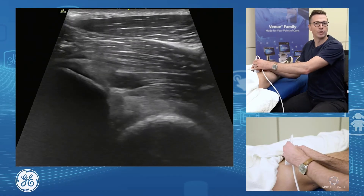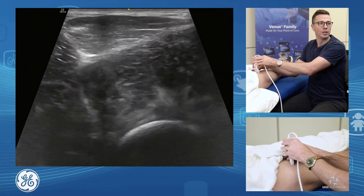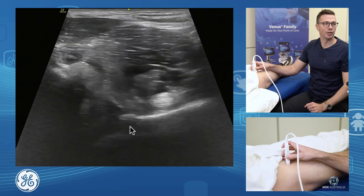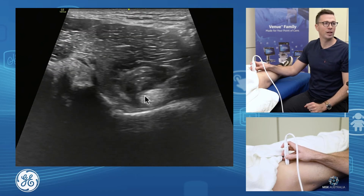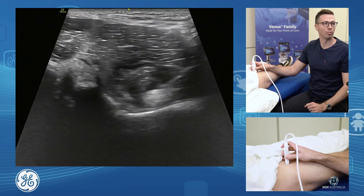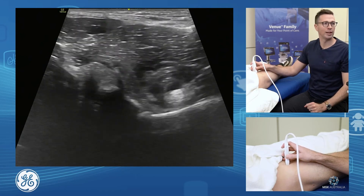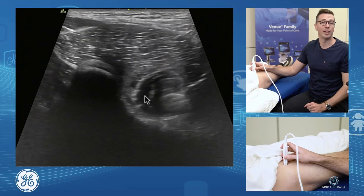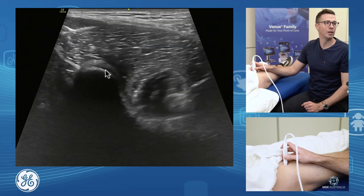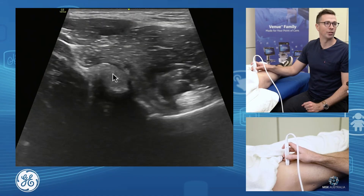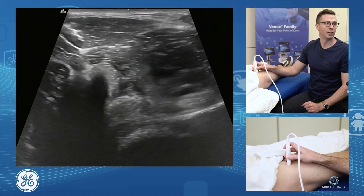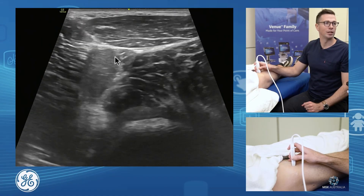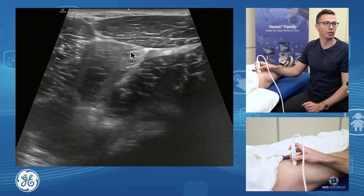The other way of getting to rectus femoris is from the anterior hip joint. We find our iliopsoas and just bring our probe lateral and a little bit superior to identify the anterior inferior iliac spine. There's our AIIS and the rectus femoris coming off with our reflected head, giving its contribution to the muscle.